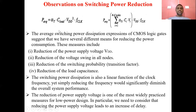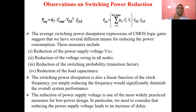Now we'll look at methods to reduce dynamic power. If we reduce any one of the parameters — alpha_t, C_load, V_DD², or clock frequency f — we can reduce the average dynamic power. However, if we increase the clock frequency, power consumption increases, and if we decrease it, the speed is reduced, affecting the circuit's performance. That's why we don't simply adjust the clock frequency.